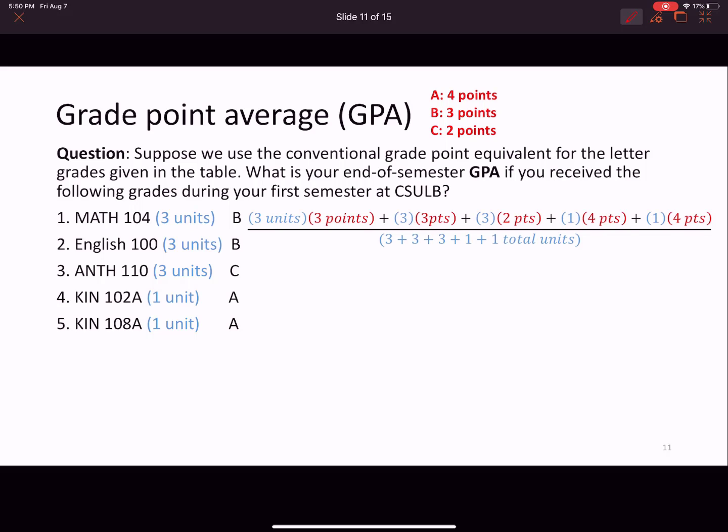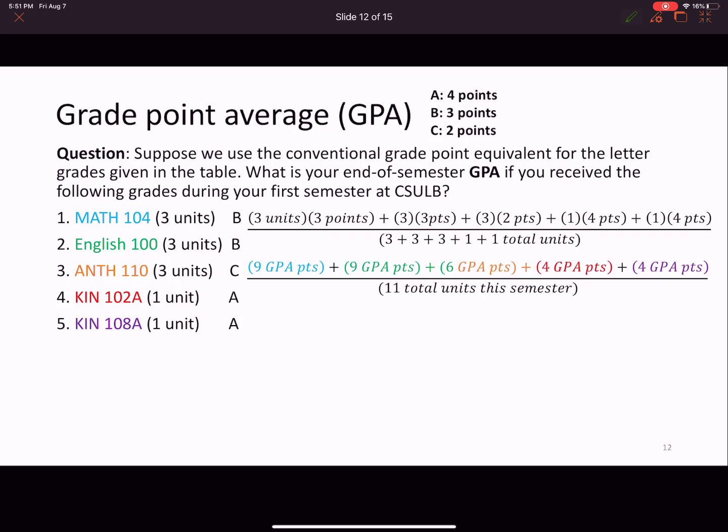So I'm going to take this information and I'm going to do this fraction right here. I am taking this, this first part represents what's happening in math 104. So the blue represents the weight. It's the three units from the weight here. It's my color coordinated. And you got a B. And so a B equates to three points. So here's your three points. And then I did that again. We did that with English. So here's English. And here's what's going on with English. So that's the entire numerator there. And in the denominator, we just added all of the units that you took this semester. So then I have, here are the colors. Here's your GPA points for each of your classes. So you got nine GPA points for math. You got nine GPA points for English. You got six GPA points for anthropology, four for kinesiology, and another four for kinesiology. And then we also took the denominator. We said you took 11 total units this semester. And so then that means you have a total. I just added up the numerators. You have a total of 32 GPA points divided by 11 units that you took this semester. That's how your GPA gets calculated.